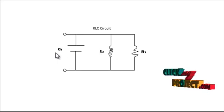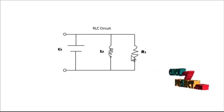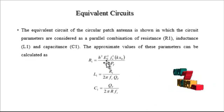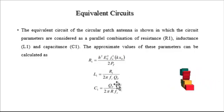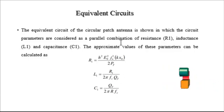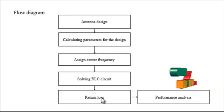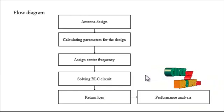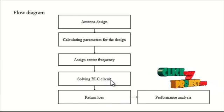The RLC circuit consists of R1, L1, and C1 — resistor, inductor, and capacitor — serially and parallelly connected. Solving the RLC circuit, we find R1, L1, and C1 from the equations, where H is the substrate thickness, R1 is the resistance, Qt is the quality factor, and FR is the center frequency. These are the equations for the equivalent circuit. The return loss S11 is then calculated; it should always be less than minus 10 dB for the antenna to operate.